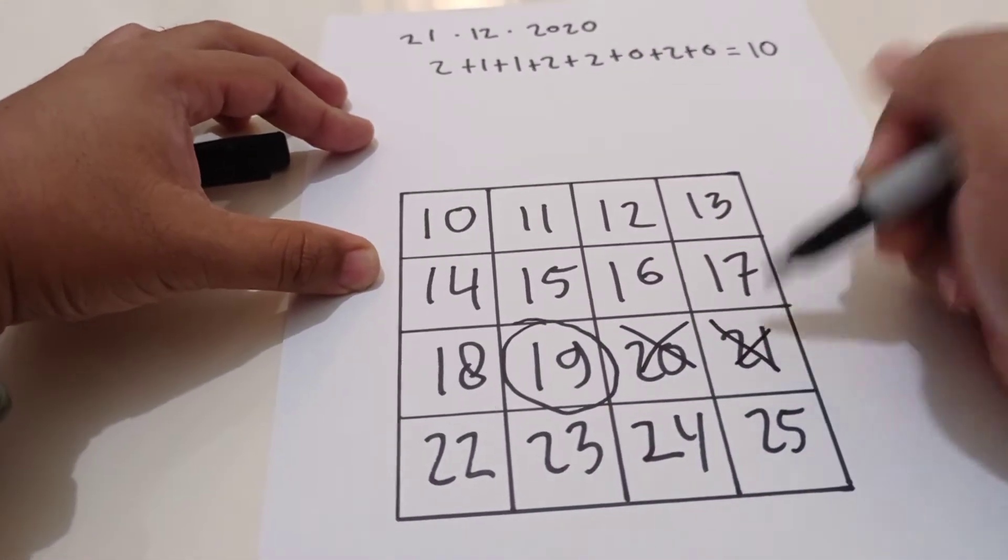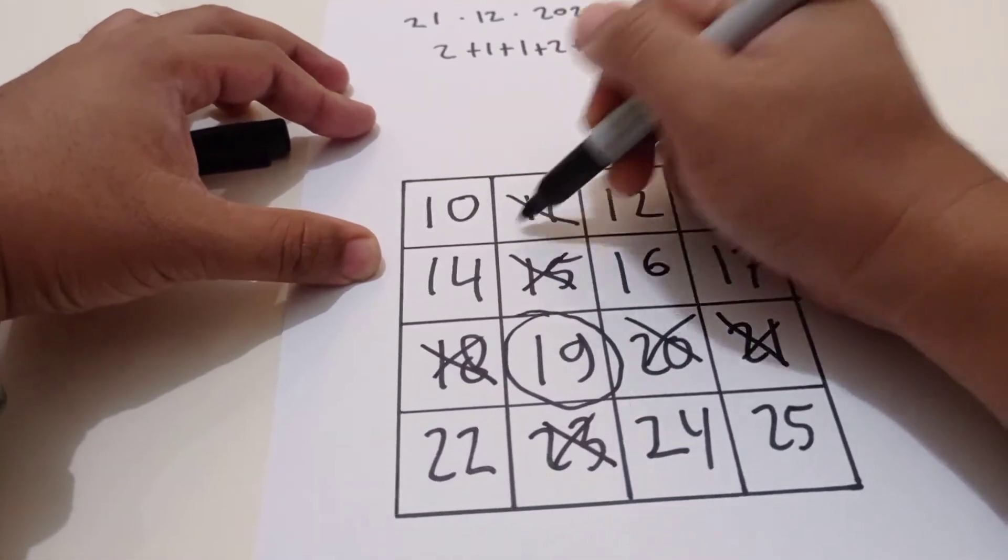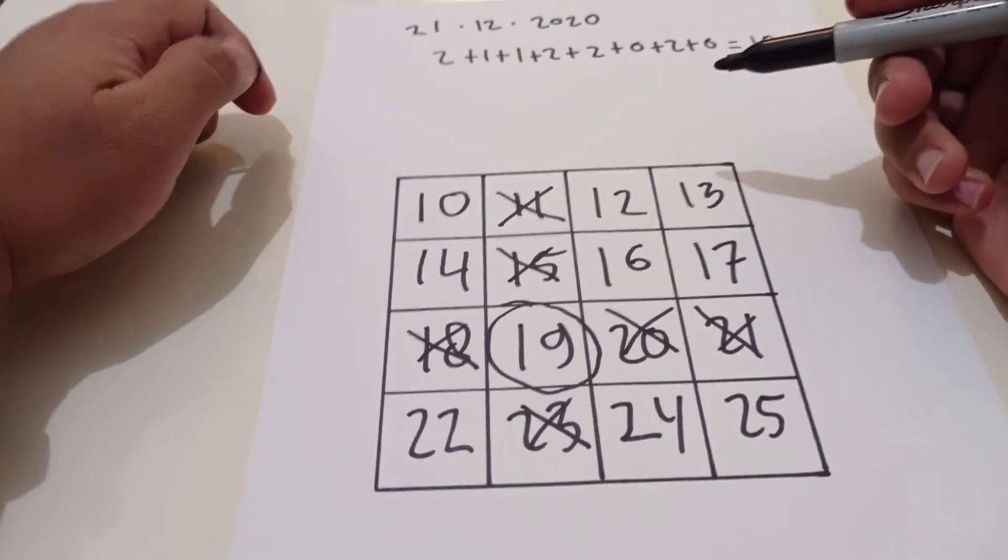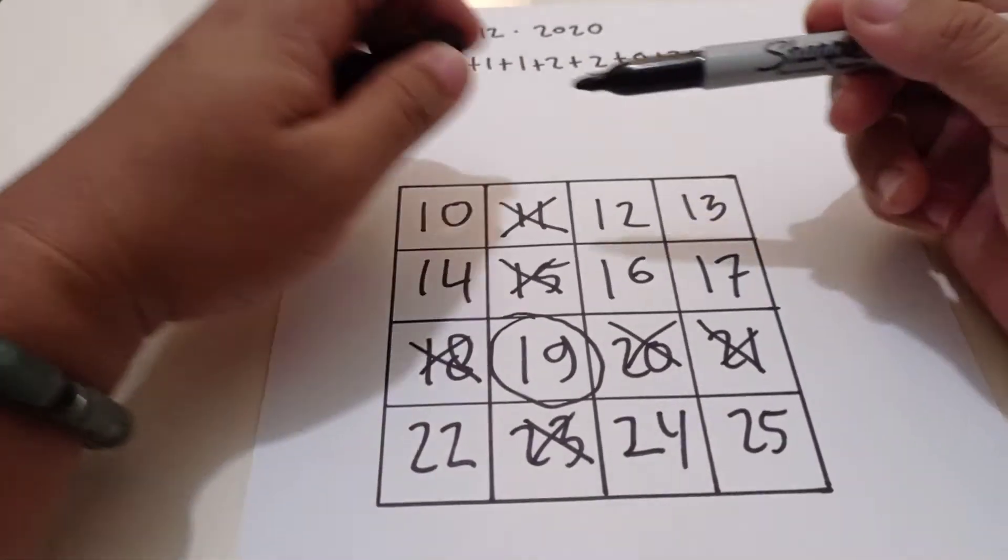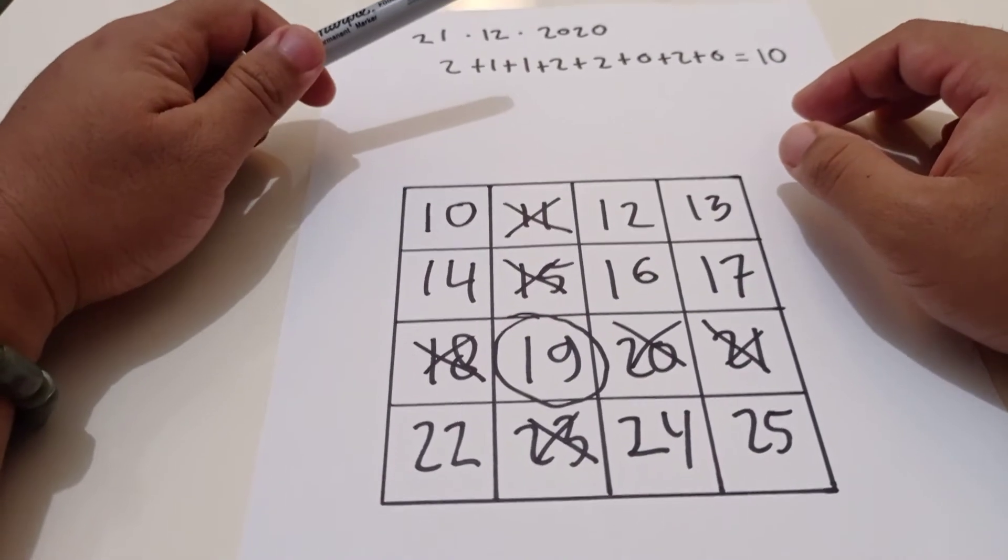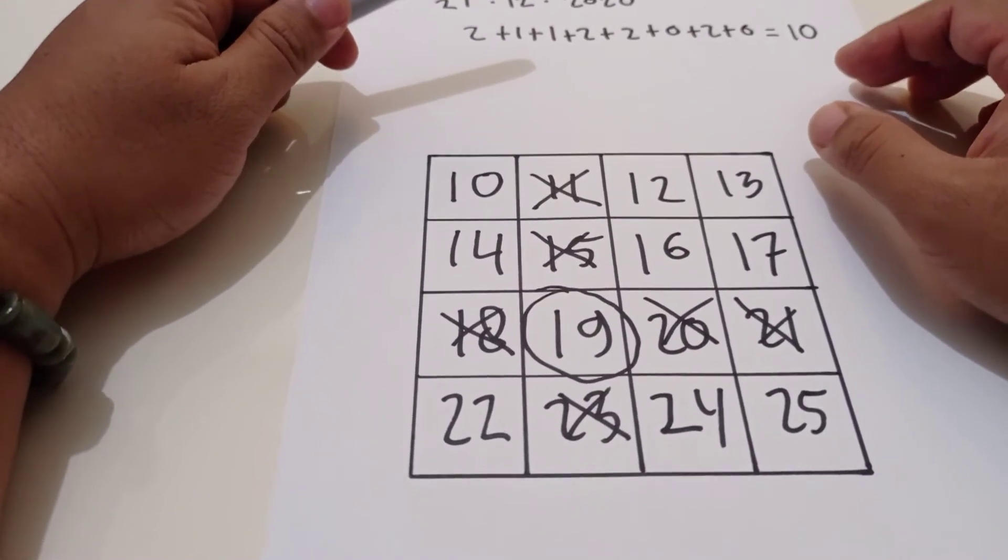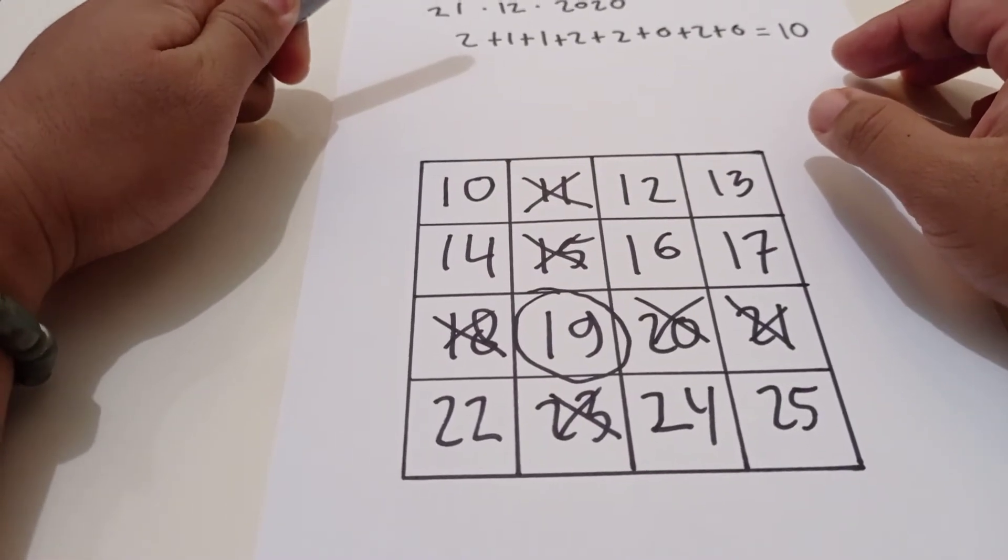Now you do it with your own number. Okay, do it one more time. Select any remaining number and eliminate the other numbers in that same row and column.